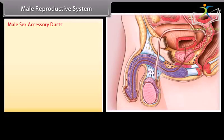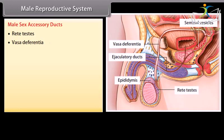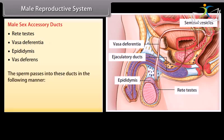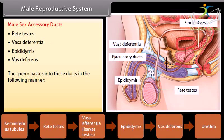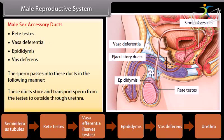The male sex accessory ducts include the rete testis, vasa efferentia, epididymis, and vas deferens. The sperm passes into these ducts in sequence. These ducts store and transport sperm from the testes to the outside through the urethra.